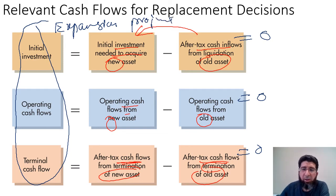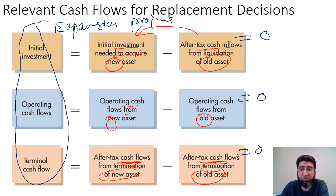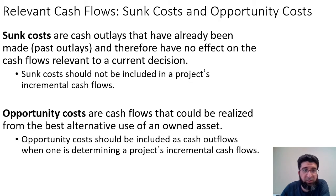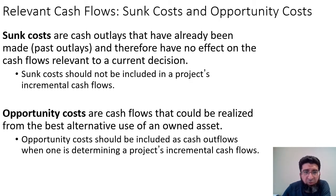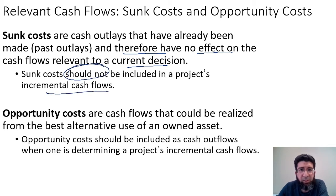Essentially, all projects can be framed as replacement decisions. Expansion projects are simply the special case where the old asset's cash flows — initial, operating, and terminal — are all zero. Now let's look at sunk costs and opportunity costs. Sunk costs are cash outlays that have already been made and therefore have no effect on the cash flows relevant to the current decision. Sunk costs should not be included in a project's incremental cash flows.